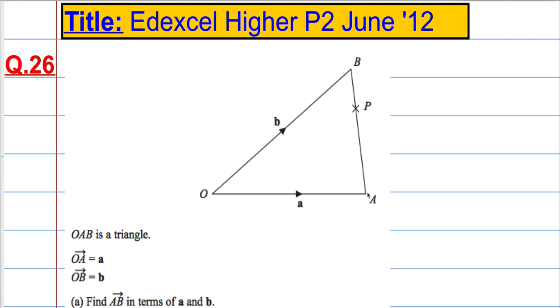Find the vector AB in terms of A and B. So, I need to get from O to B using these vectors here. So ideally, I would like to go from O to A and then go from O to B. And by doing that, it's the same as going from A to B.